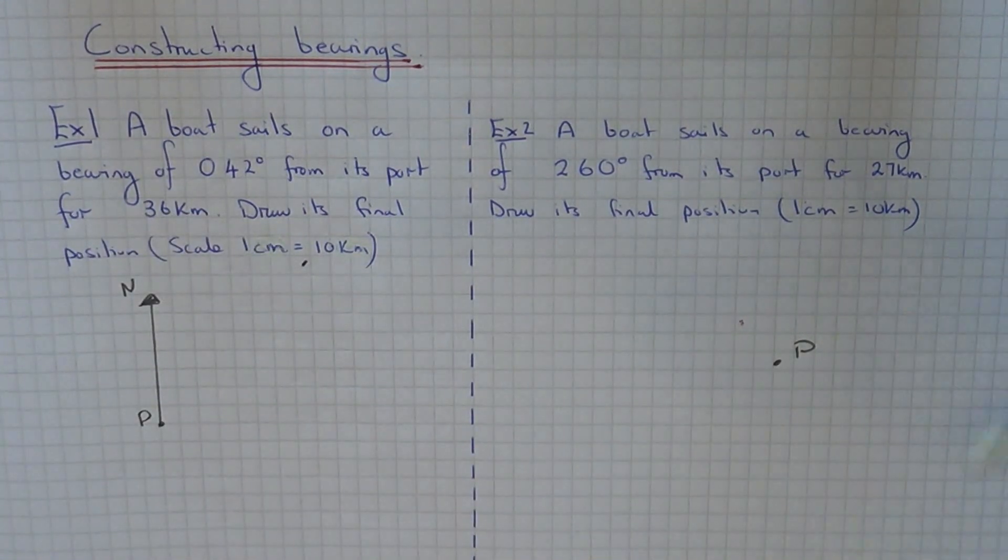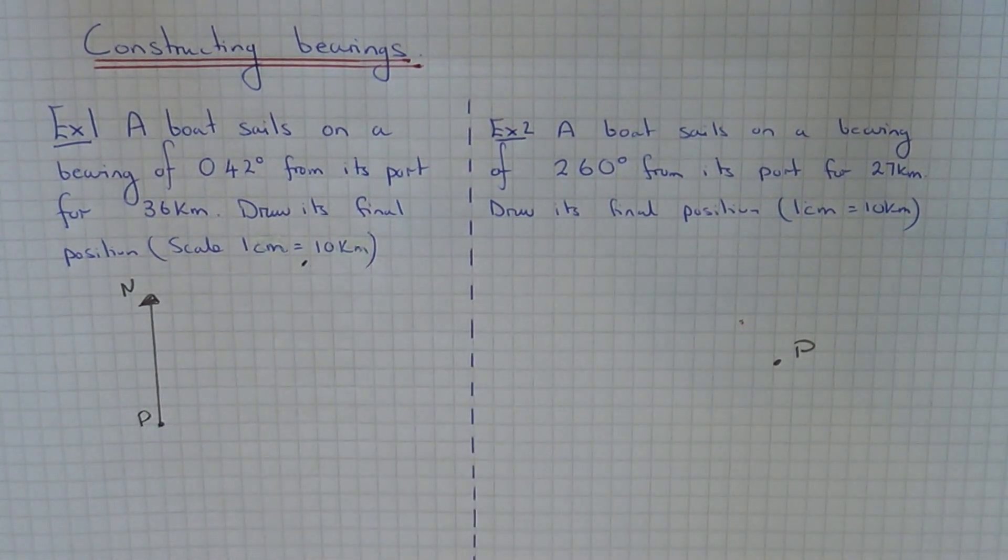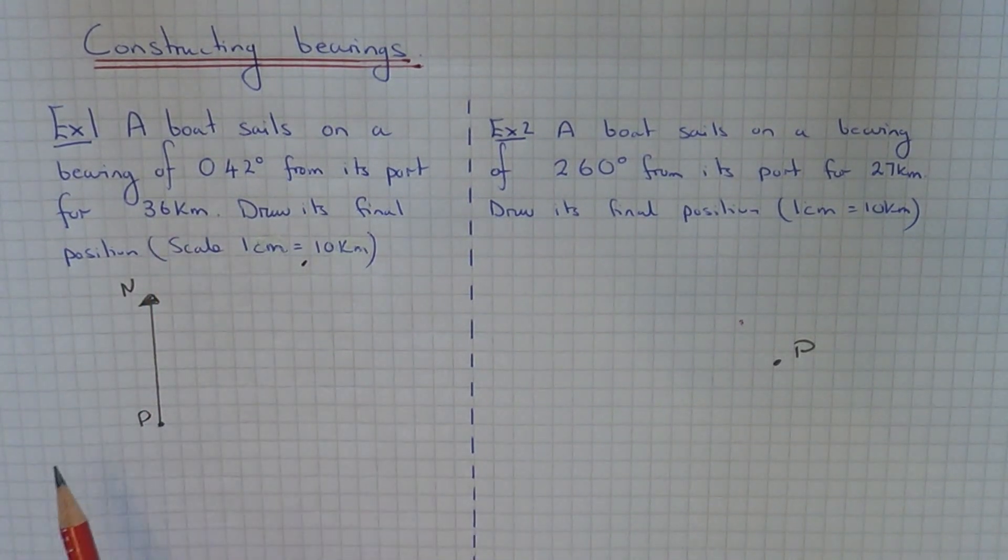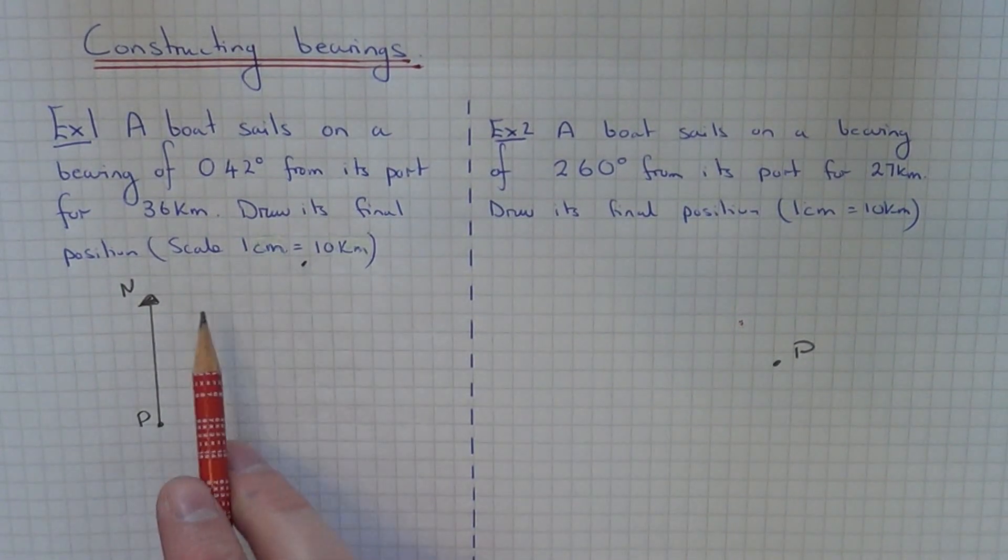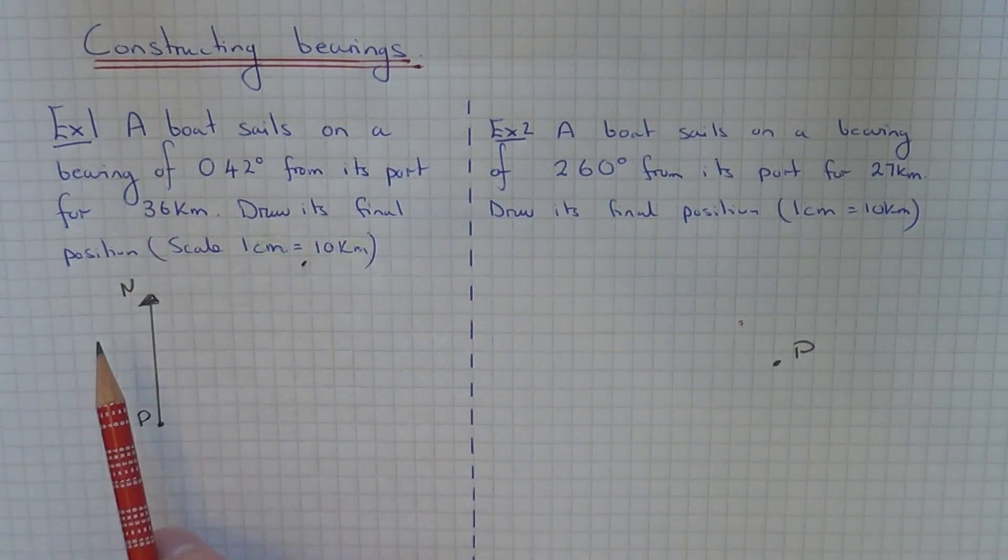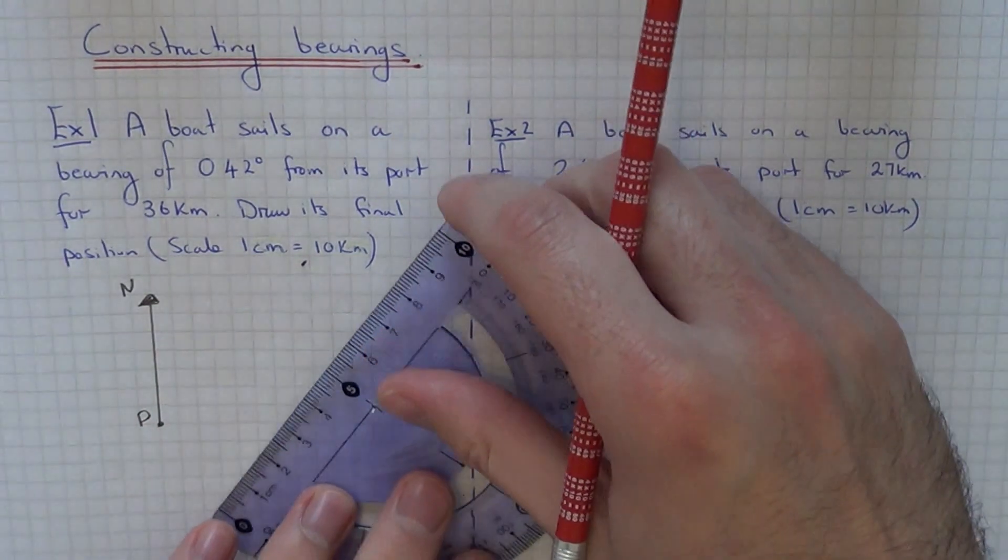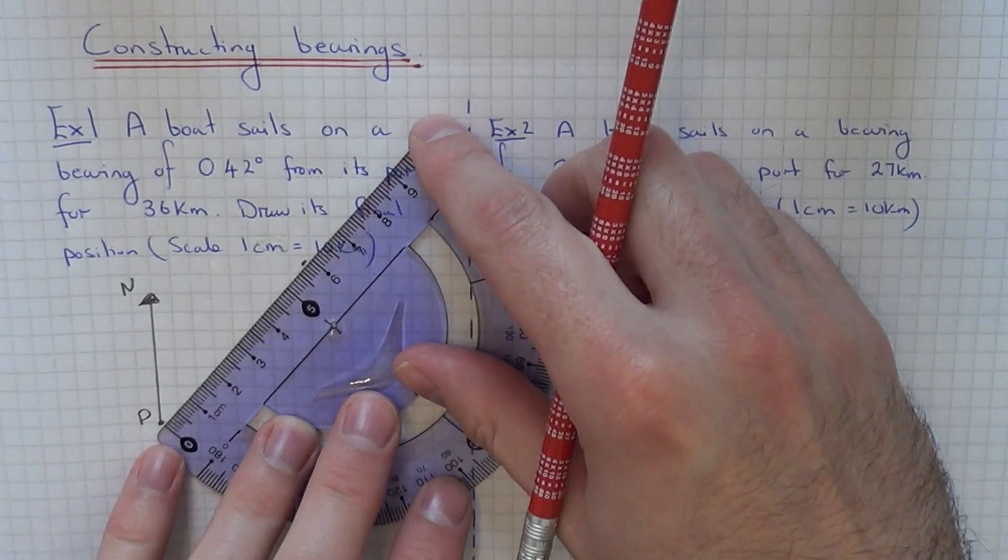All we need to do now is get the correct length for the line because we know that the boat is travelling in this direction. It's going for 36km. The scale is 1cm to 10km. If we divide 36 by 10, that gives us 3.6cm. We just need to now measure a length of 3.6cm.